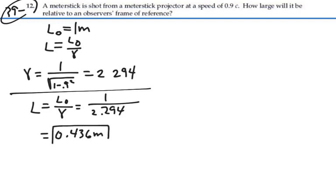So anybody else observing this meter stick traveling at 0.9 the speed of light is going to see it as only being 43.6 centimeters long, 0.436 meters.